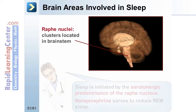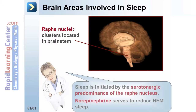Sleep is initiated by the serotonergic predominance of the raphe nucleus. Norepinephrine serves to reduce REM sleep.